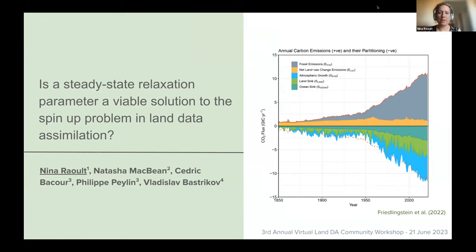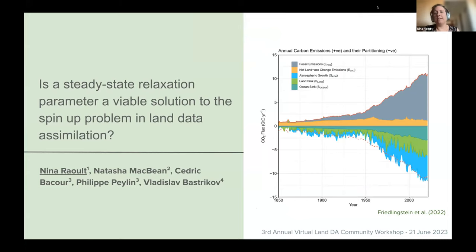One of the biggest challenges we face in the land surface modeling community is being able to get the land carbon sink right. I've already touched on this, especially the distribution globally, and we really want to know how it evolves. If we can't simulate it correctly now, we don't really have much hope for our future projections. One of the ways we can correct it is through data assimilation.